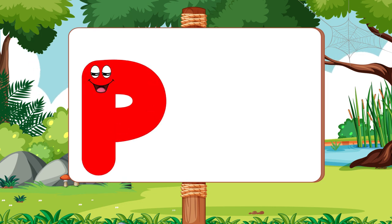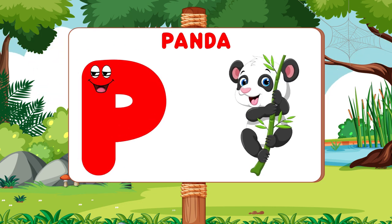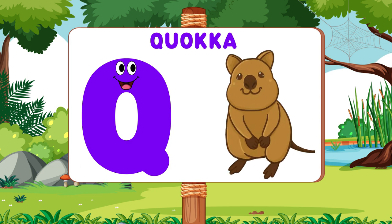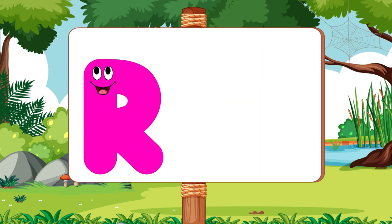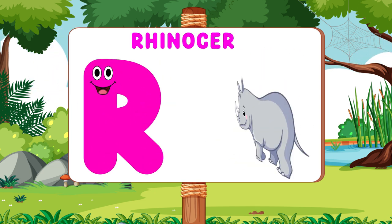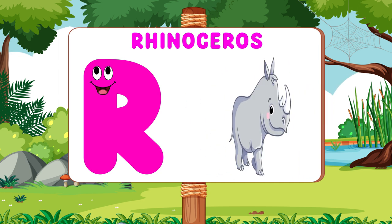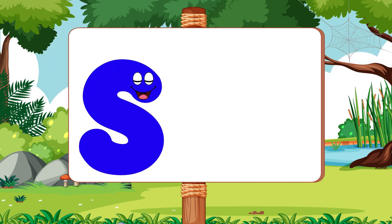P is for Panda. P, P. Panda. Q is for Quokka. Qu, Qu. Quokka. R is for Rhinoceros. R, R. Rhinoceros.